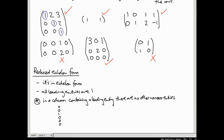But condition star fails because, for example, in this second column, the leading entry is one. There's a zero, but there's also a two. So that's no good. So condition star fails.